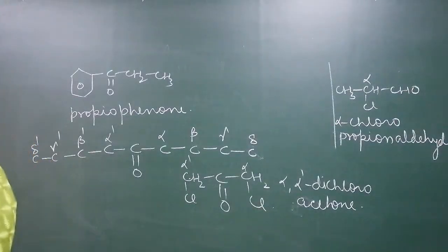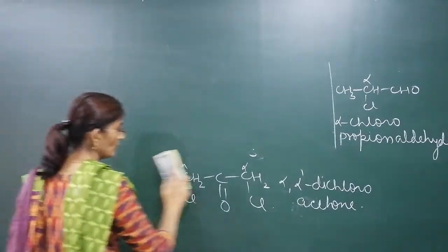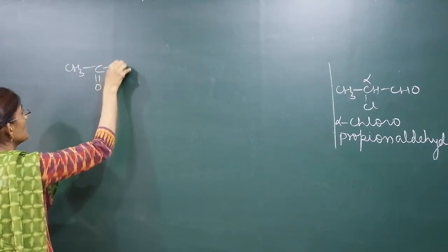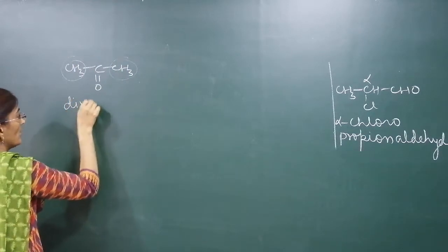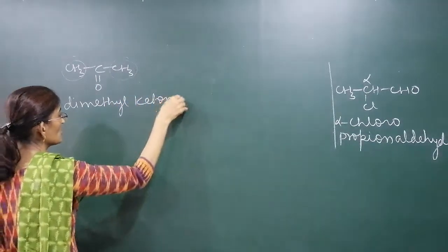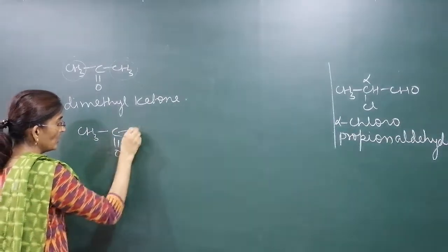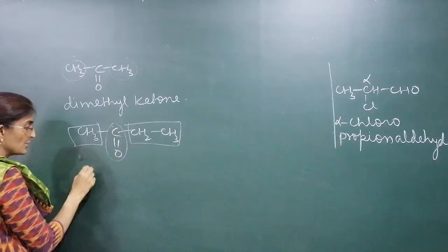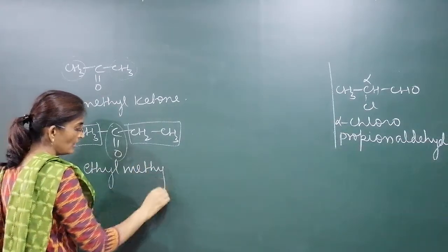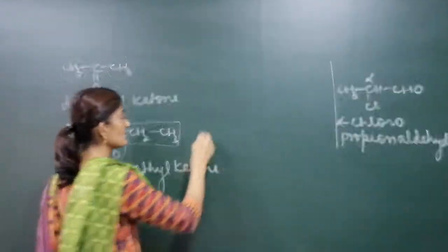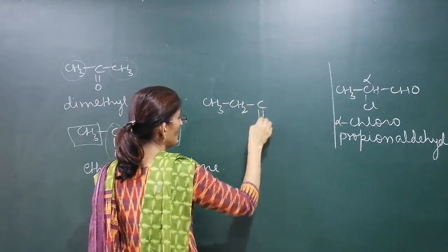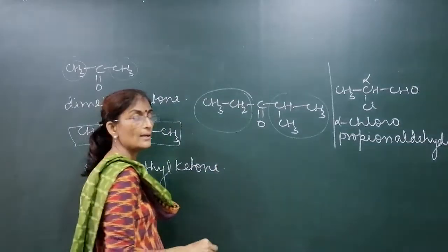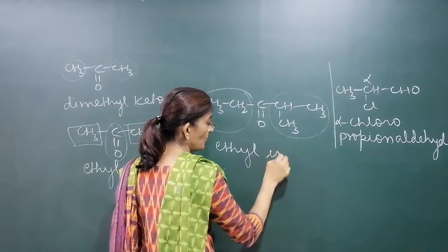Another way to write the common name of a ketone is by mentioning the names of the alkyl groups on either side of the C=O group. For example, acetone (CH₃–C(=O)–CH₃) can also be called dimethyl ketone. If the compound is CH₃–C(=O)–CH₂CH₃, one group is methyl and the other is ethyl, so its name is ethyl methyl ketone. If we have CH₃CH₂–C(=O)–CH(CH₃)₂, one group is ethyl and the other is isopropyl, so its name is ethyl isopropyl ketone.